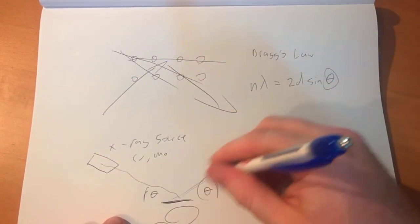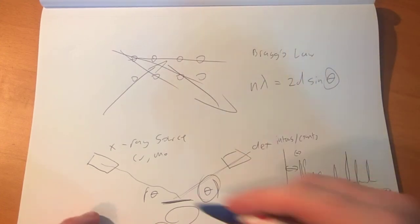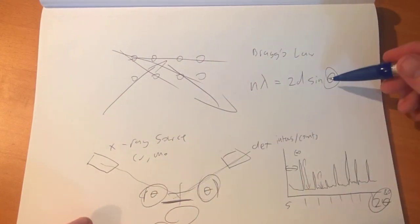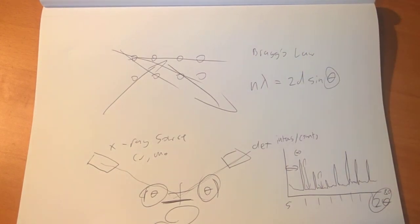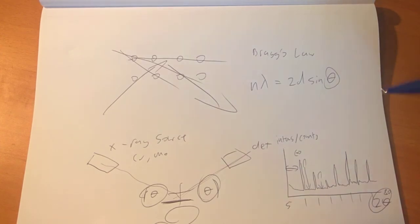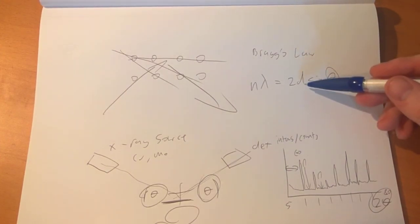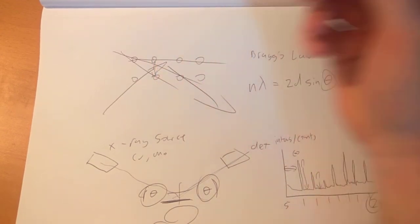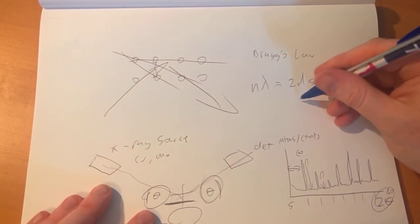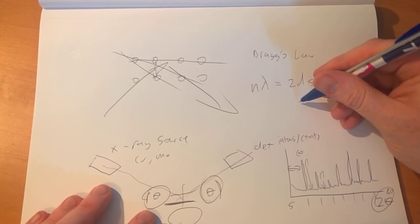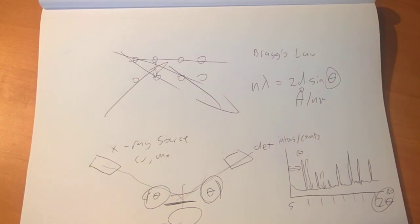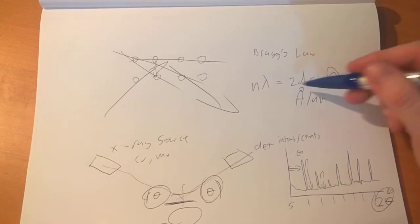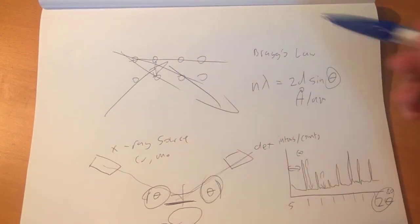Now theta is this angle, notice we measure 2 theta, which is that plus that. So you take the sine of that angle. D is the distance between the crystal atoms in the crystal, normally measured in angstroms or it could be nanometers, I can't remember off the top of my head. But that is the distance between crystals. Lambda is the wavelength of your X-rays.